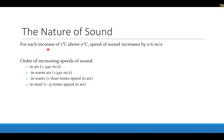For every increase of one degree Celsius above zero, the speed of sound increases by 0.6 meters per second. So at one degree Celsius it would be 330.6 meters per second, at two degrees you add another 0.6, and so on. In air at around room temperature, the speed of sound is about 340 meters per second. If a problem doesn't specify the temperature, we just assume room temperature, which is 340.